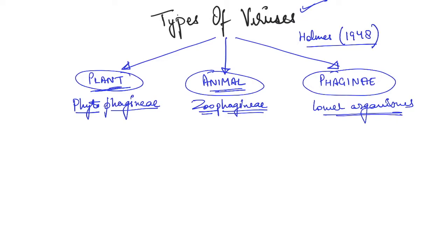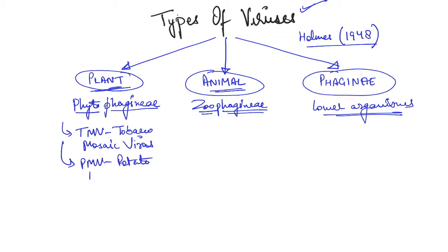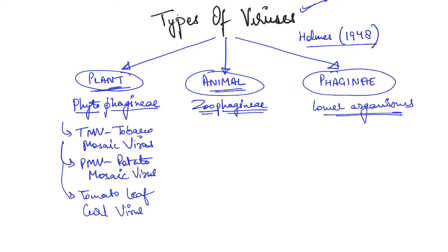Plant viruses can be of different types. One very common type is TMV, that is Tobacco Mosaic Virus. Then we have PMV, which is Potato Mosaic Virus, and also Tomato Leaf Curl Virus. Just remember these names for the exam.